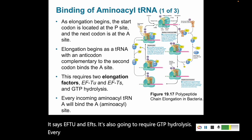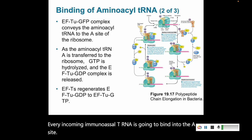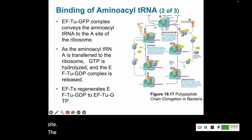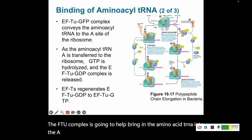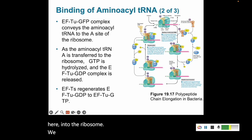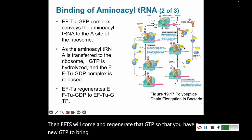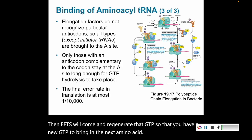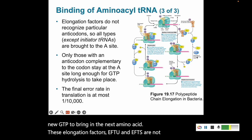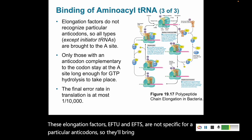Every incoming amino acid tRNA is going to bind into the A-site. The EF-TU complex helps bring the amino acid tRNA into the A-site, and when it is transferred into the ribosome, we hydrolyze GTP and release EF-TU. Then EF-TS comes and regenerates that GTP so that you have a new GTP to bring in the next amino acid. These elongation factors, EF-TU and EF-TS, are not specific for particular anticodons — they'll bring all types of tRNA except for the initiator tRNA.